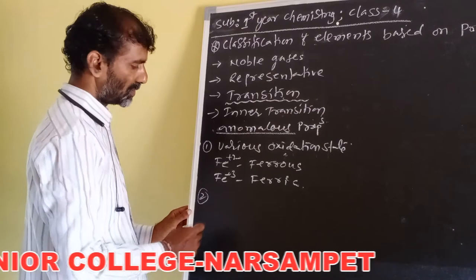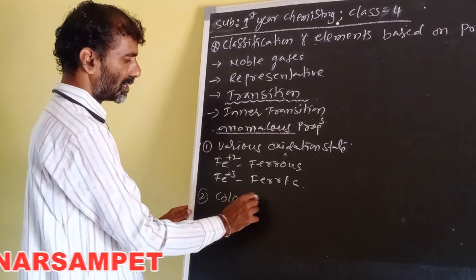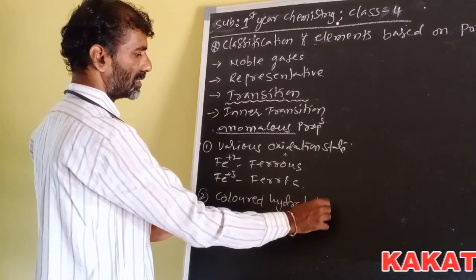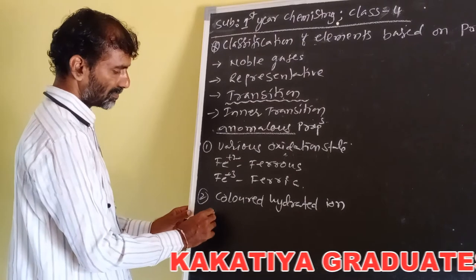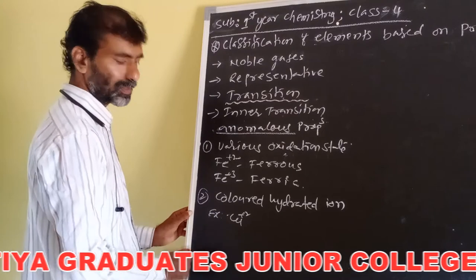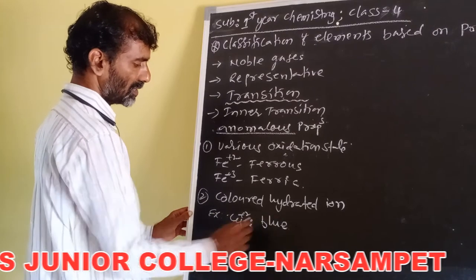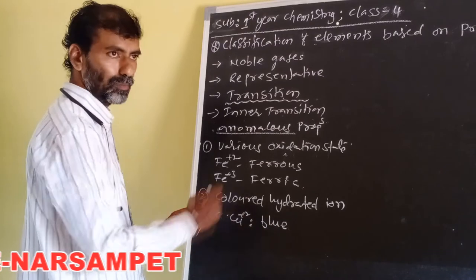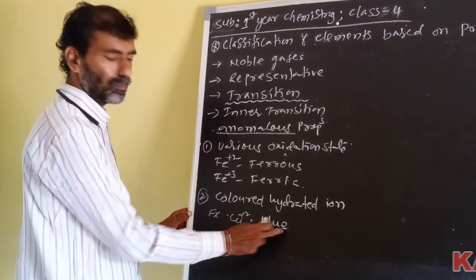Transition elements show colored hydrated ions. For example, the Cu²⁺ ion appears in blue color. It absorbs the red color and transmits the blue color, hence it appears as a blue color.